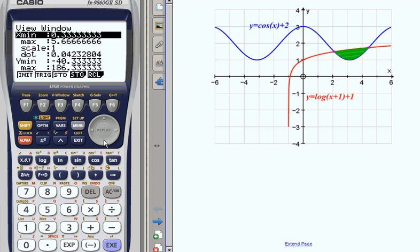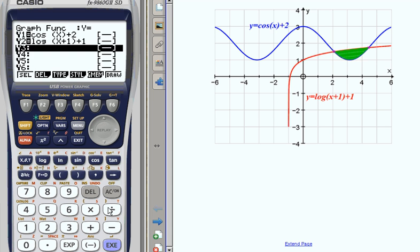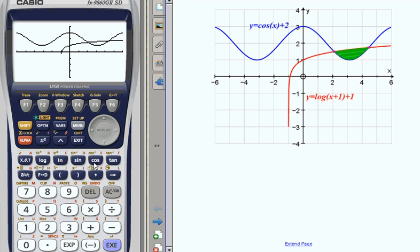So this is from x from minus 6 to 6, and the y is from minus 4 to 4. Now if we draw it, we can see what we're looking for. And we can see the area here is what we're looking for.